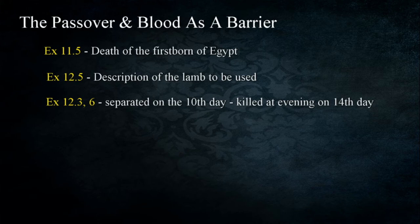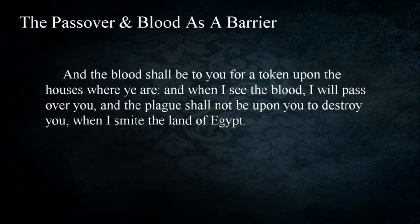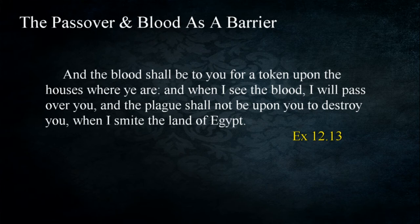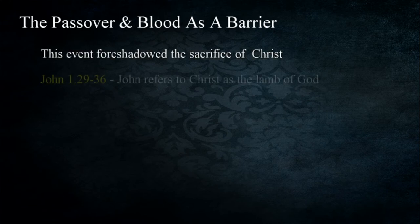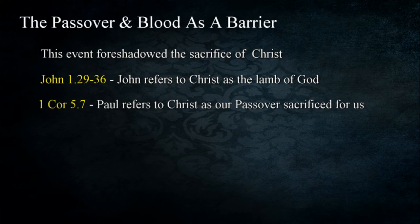The lamb was to be separated on the tenth day of the first month, and on the fourteenth day in the evening they were to kill the lamb in Exodus 12:3 and 6. As part of this observance, they were to mark their dwellings with blood: 'They shall take of the blood and strike it on the two side posts and on the upper door post of the houses' in Exodus 12:7. God explains: 'The blood shall be to you for a token upon the houses where ye are, and when I see the blood I will pass over you, and the plague shall not be upon you to destroy you when I smite the land of Egypt' in Exodus 12:13.